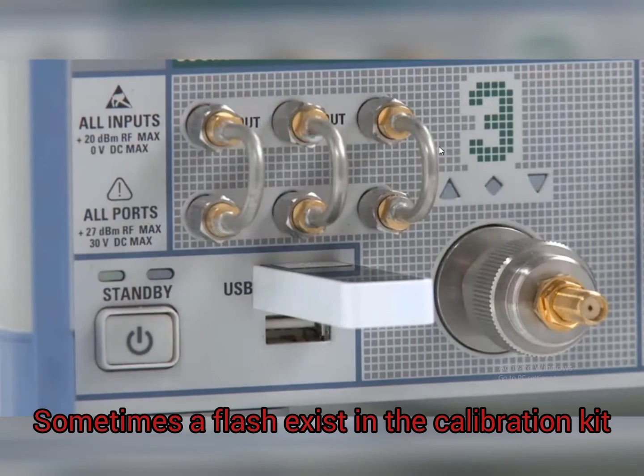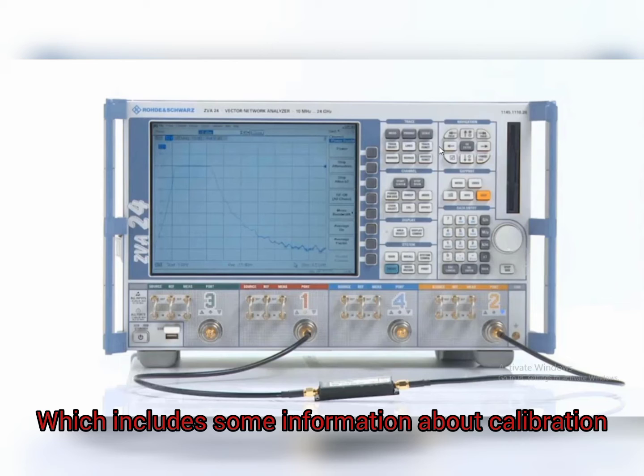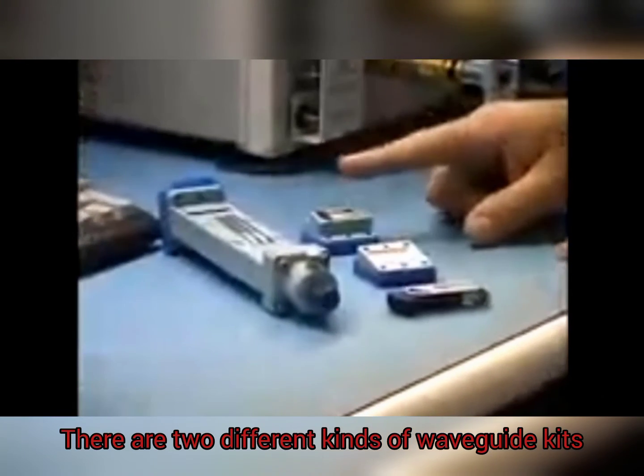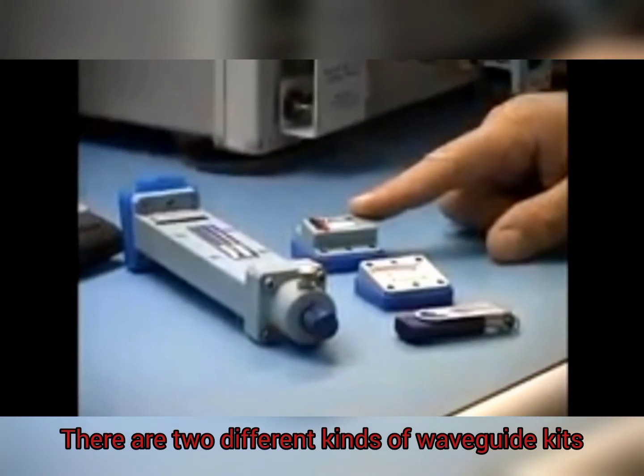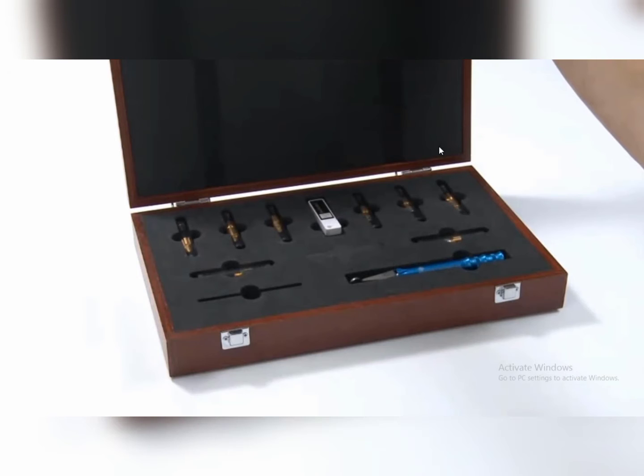Sometimes, a flash exists in the calibration kit, which includes some information about calibration. There are two different kinds of waveguide kits and coaxial kits for calibration, in different frequency ranges.